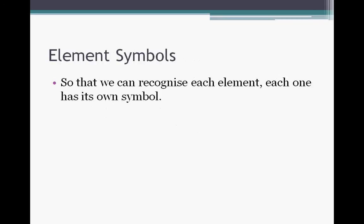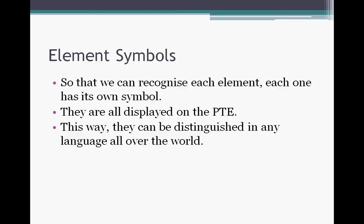Element symbols. So that we can recognize each element, each one has its own symbol on the periodic table of elements. This way they can be distinguished in any language around the world. So whether you are speaking French, German, Spanish, each of the elements will have a different name, but the symbols are always the same. Every single country uses the same periodic table of elements and all the symbols are the same, so there is no language barrier between scientists when they discuss elements.